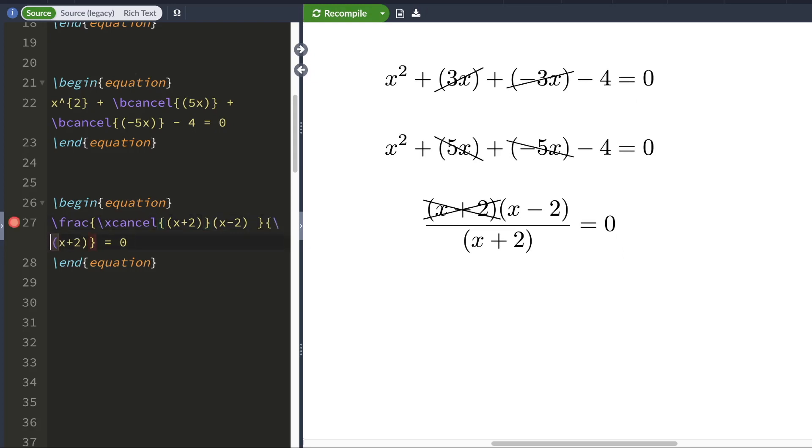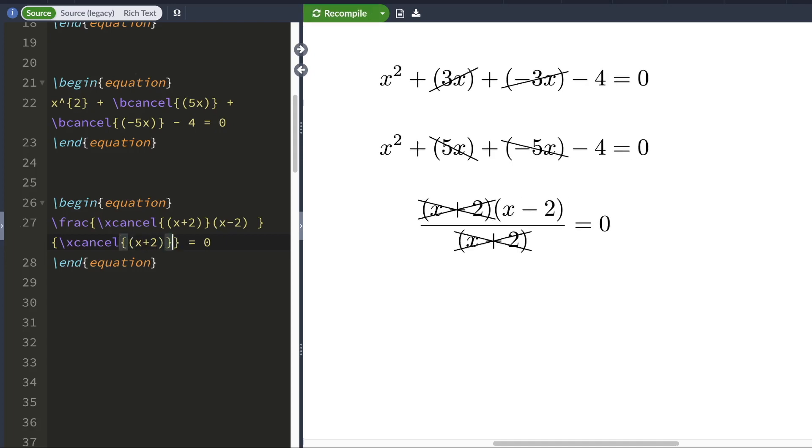I'm going to do the same for the denominator. Xcancel. When I hit compile, this term would be canceled out as well.